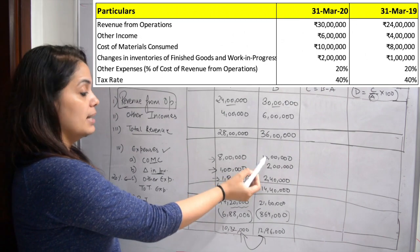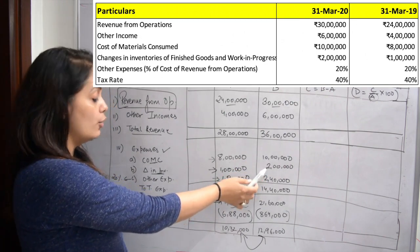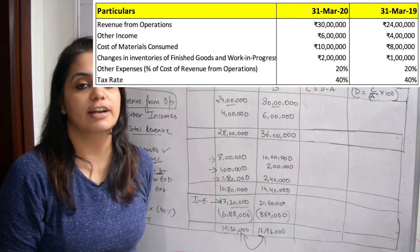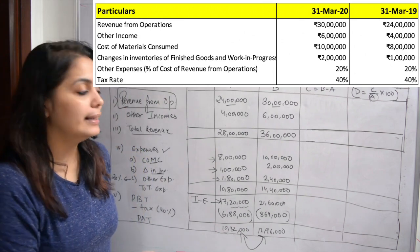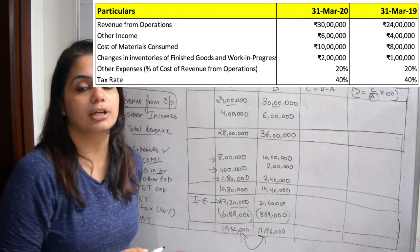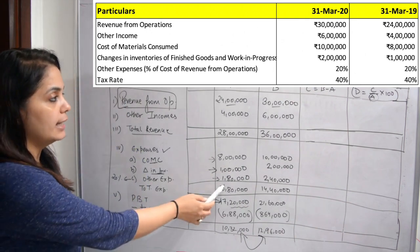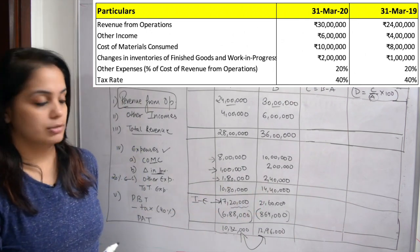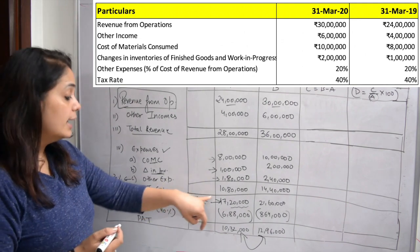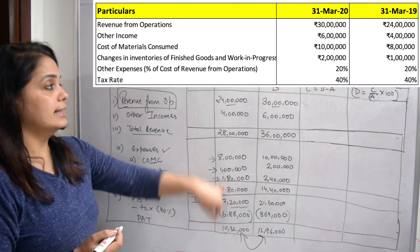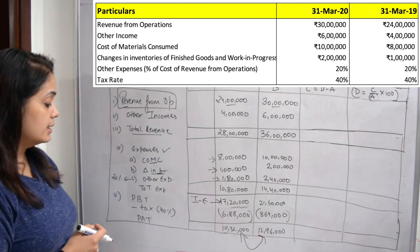Similarly for 2020, cost of material consumed is 10 lakhs and change in inventories is 2 lakhs, so total is 12 lakhs. 20% of 12 lakhs will be 2 lakhs 40,000. So other expenses are 1 lakh 80,000 and 2 lakhs 40,000 respectively. Therefore my total expenses are 10 lakhs 80,000 in the previous year and 14 lakhs 40,000 in the current year.